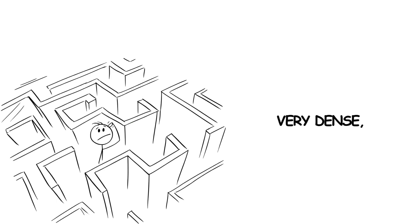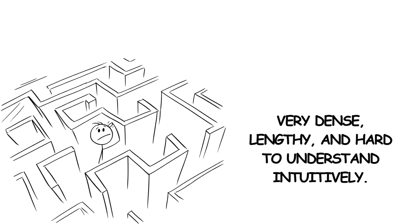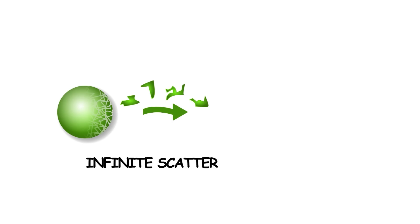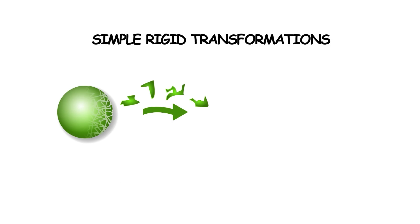Unfortunately, the proof of this fact is very dense, lengthy, and hard to understand intuitively. However, it essentially involves decomposing a ball into a bunch of infinite scatterings of points, which are not measurable by volume. Using simple rigid transformations then allows us to snap these pieces back together into two balls, completing the process.